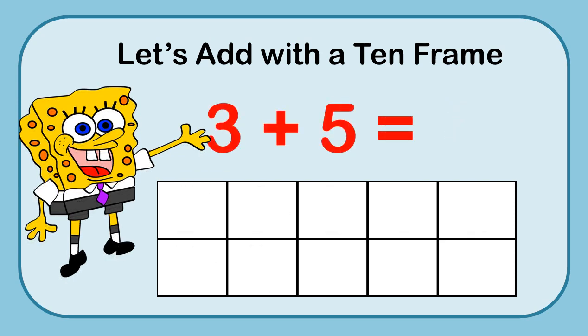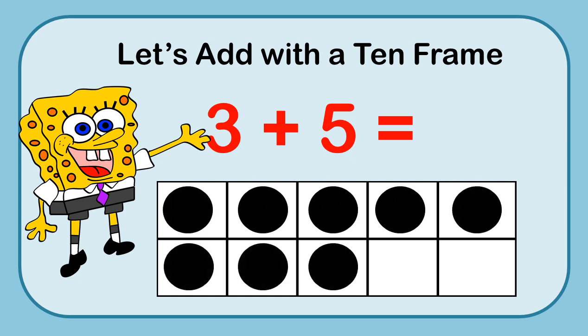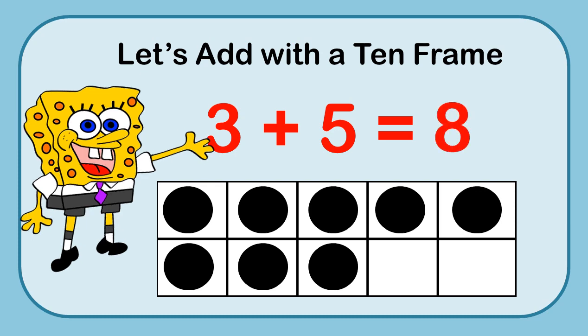3 plus 5. Put 3 in there and then 5 more: 1, 2, 3, 4, 5. I could flip this problem around — I could see that 5 go on the top row and 3 on the bottom, if it made it easier to solve. But I know that I have 5, so I'm going to count up: 6, 7, 8. So 3 plus 5 is 8.